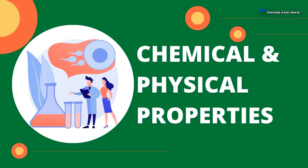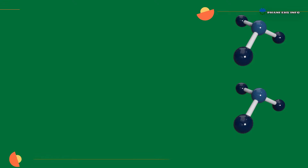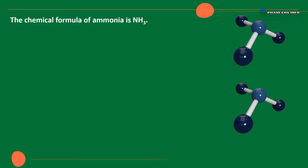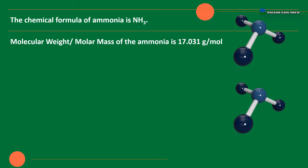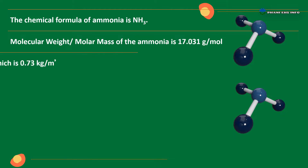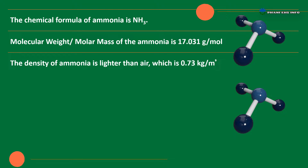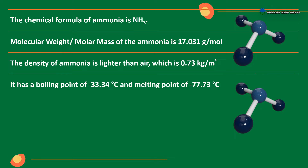Chemical and Physical Properties of Ammonia: The chemical formula of ammonia is NH3. The molecular weight or molar mass of ammonia is 17.031 g/mol. The density of ammonia is lighter than air, which is 0.73 kg per cubic meter. It has a boiling point of minus 33.34 degrees Celsius and a melting point of minus 77.73 degrees Celsius.